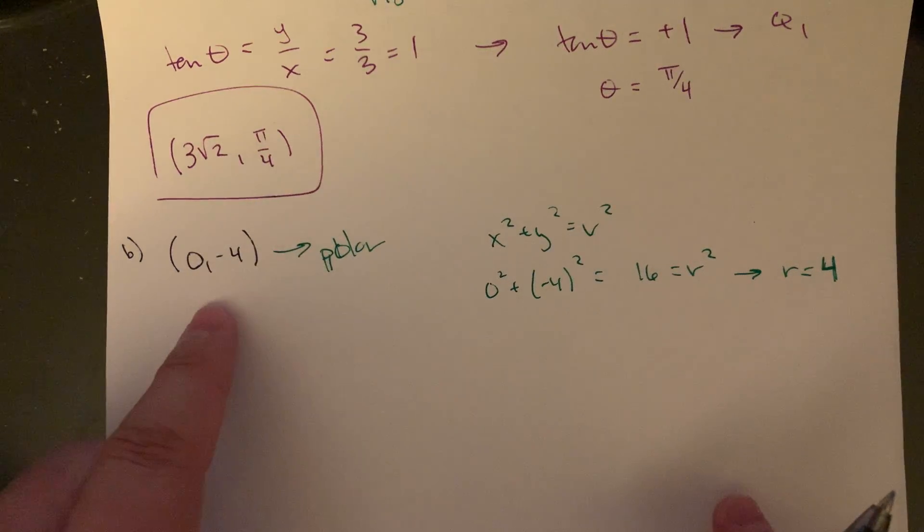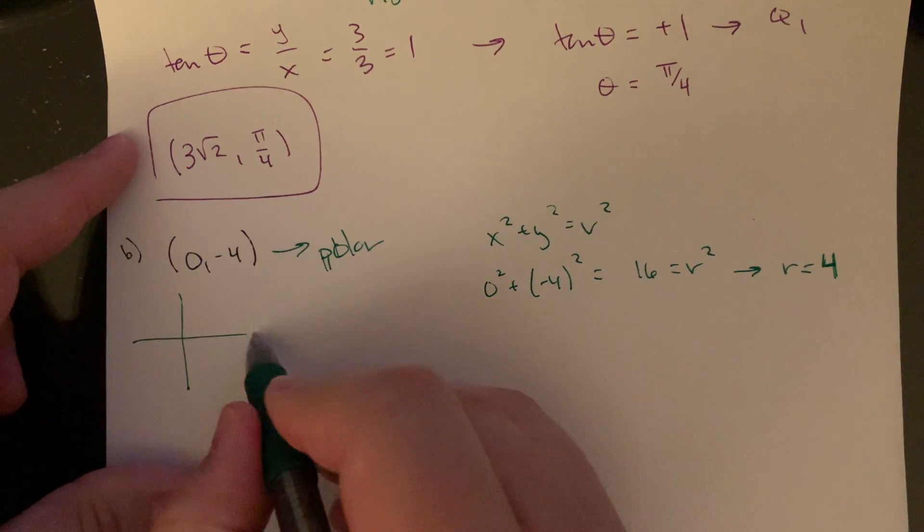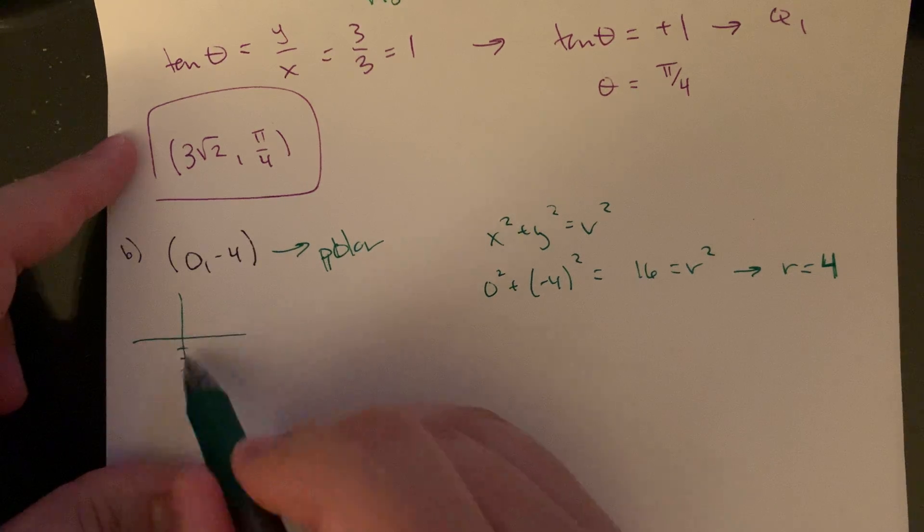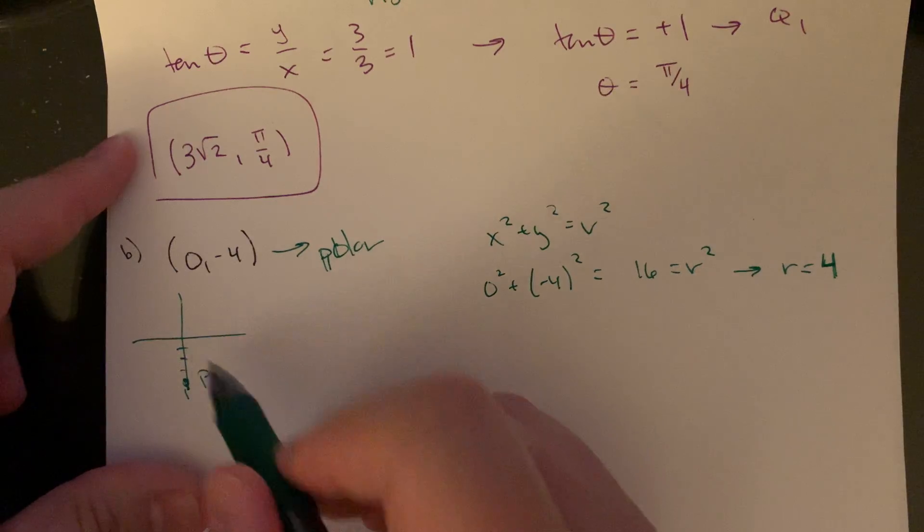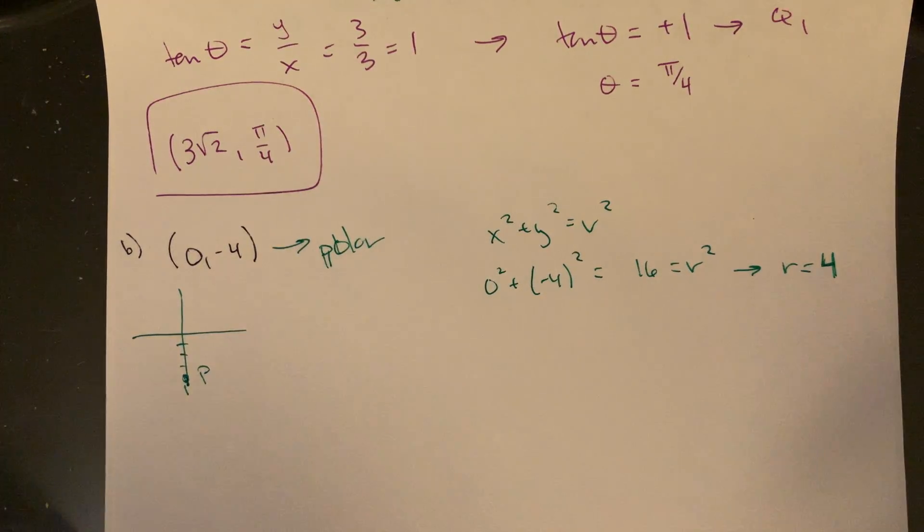Not a big shock if we think of the picture here. This would be (0, negative 4). This is where? Actually, this is going to come in. So if I graph this, 0 and then just down 1, 2, 3, 4, that's going to be where the point is.